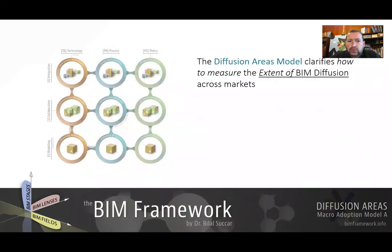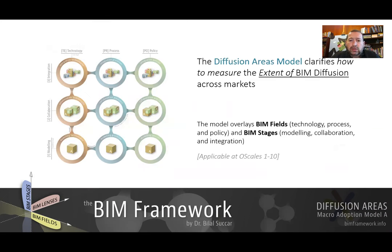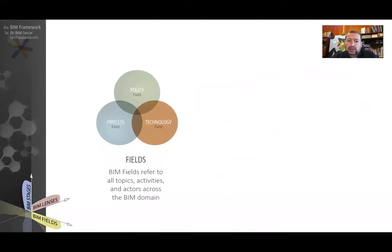The Diffusion Areas Model clarifies the extent of BIM diffusion across markets. It's not really enough to measure the number of software sold within a market, or what people claim to be at what level of implementation. We need a more robust model to help us identify the extent of BIM diffusion. In order to measure that, we need to overlay a couple of previous models — BIM fields and BIM stages.